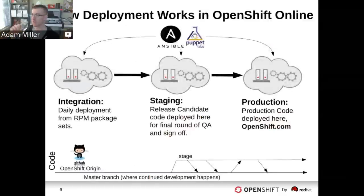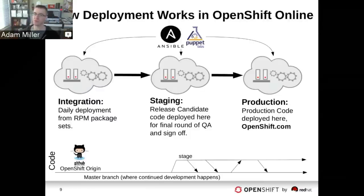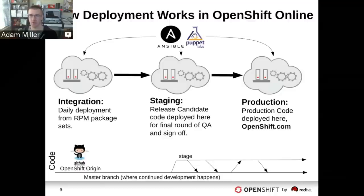Once all the code has been committed into master with all features in, we need to get into deployment. For the operations side, every day after the first four days of the sprint, we do deployments for RPM package sets. We farm out RPM builds into our internal build system, which is based on Koji — familiar from the Fedora project. We create our repository and do full deployments with all of our Ansible and Puppet tooling. We use both: Puppet is great for configuration management, Ansible is great for ordered deployment task execution.